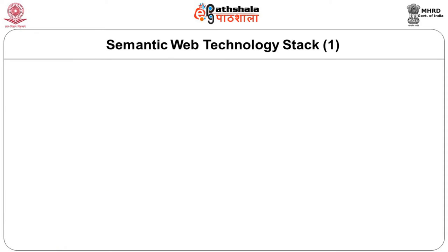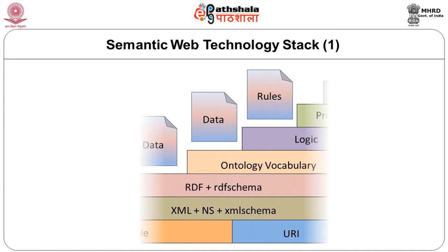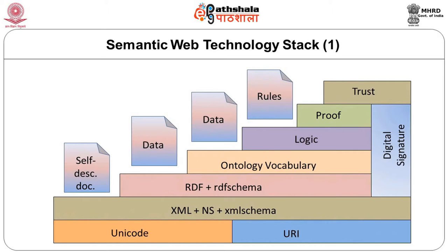This is called the semantic web technology stack — also popularly called the semantic web layer cake. It is basically layers of technologies starting from existing ones like Unicode and URI, then XML, XML namespace, and schema; then RDF, RDFS, schema, ontology, vocabulary, logic, proof, and trust. Starting from RDF and RDFS, ontology, and above — these are mainly introduced as semantic web technologies. That is why we say semantic web is just an extension of the present web: it still uses the basic technologies already in use.